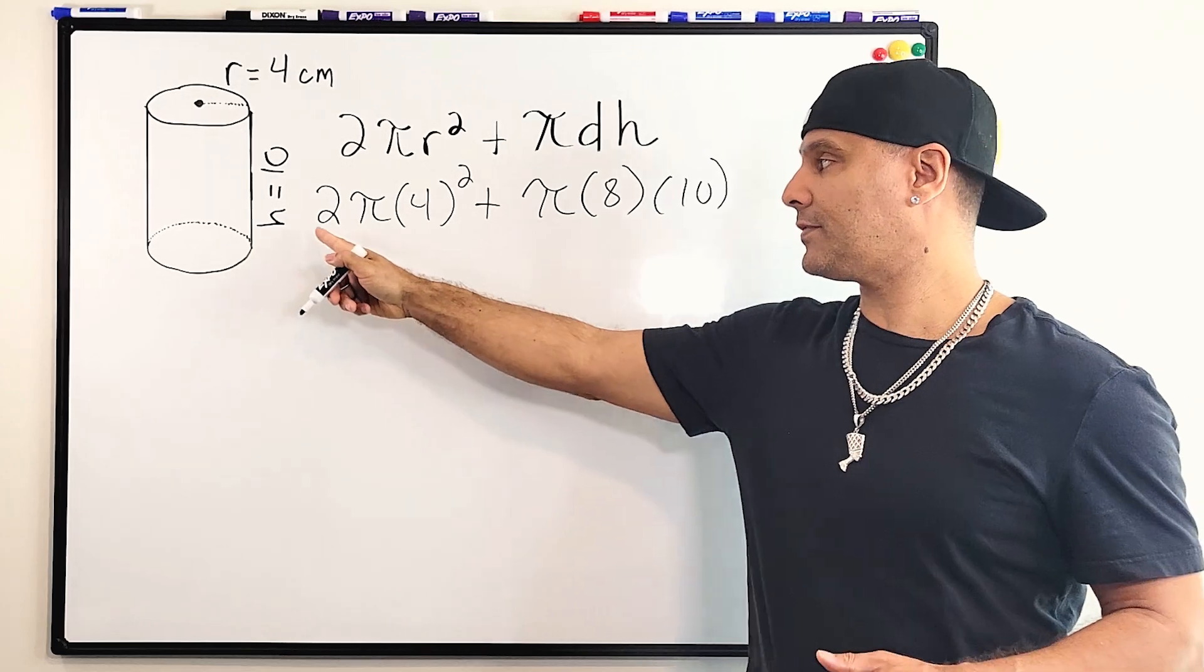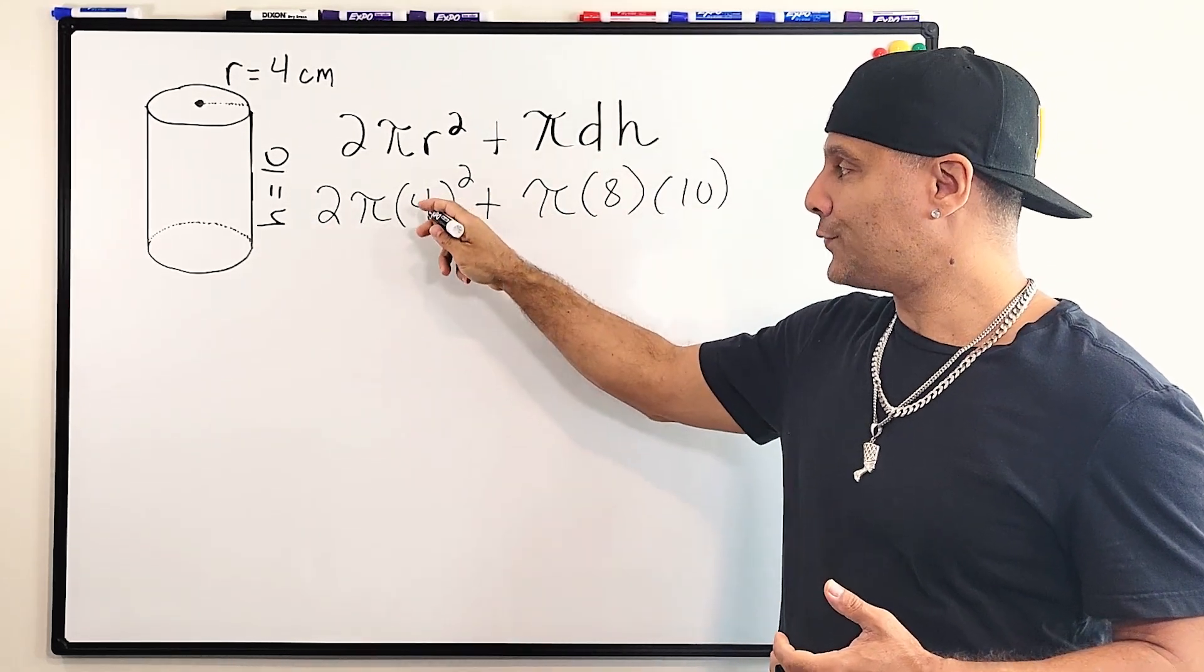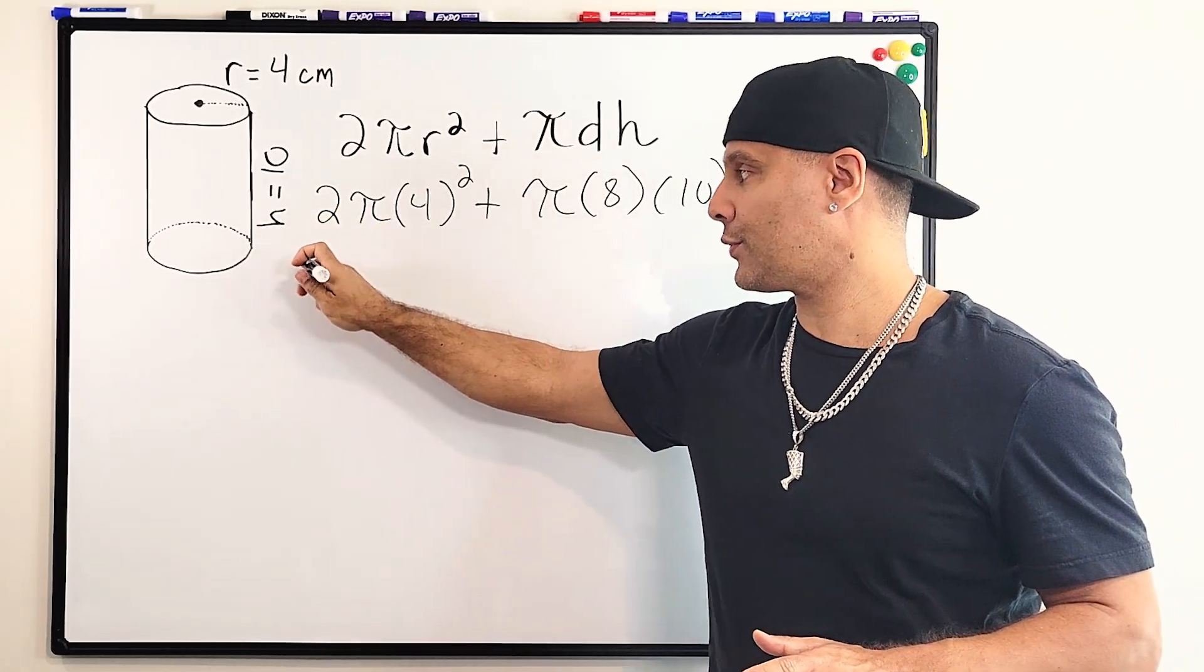Alright, so let's go ahead and simplify this side of our equation and this side of our equation. So we're going to take 4 and square it, which is 16, and then we're going to double 16, which is 32.